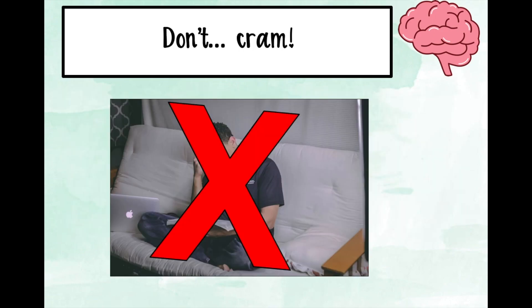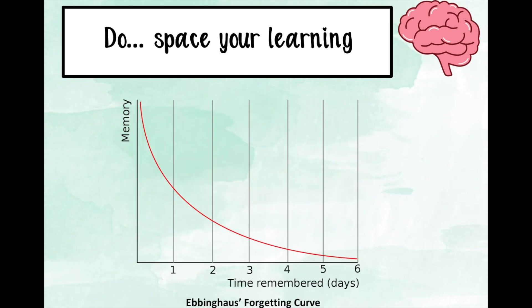Don't cram — it does not work. Your short-term memory can only hold between four and seven units of information, so cramming is ineffective. Instead, space your learning. This is Ebbinghaus's forgetting curve, a really influential model for understanding how we learn — metacognition. Essentially, as soon as you learn something, the process of forgetting immediately starts. The longer time goes, the more you forget. However, if you revisit the same information, the pace of forgetting gradually becomes slower with every repetition.